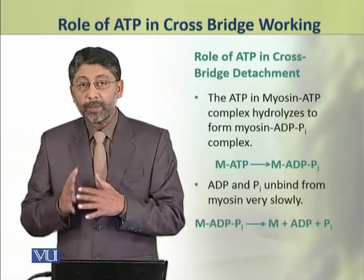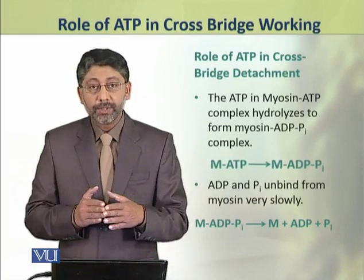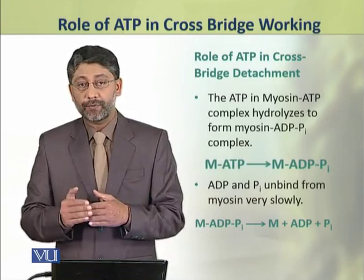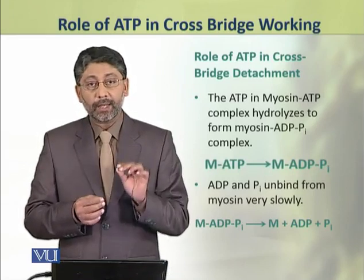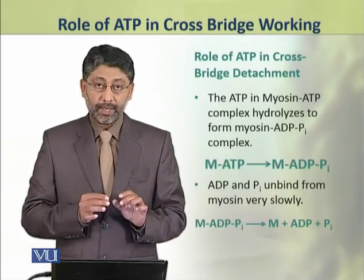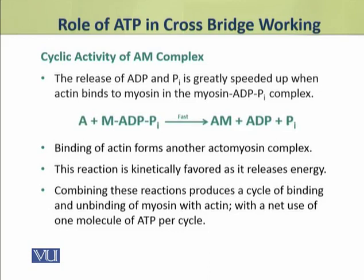The ATP in the myosin-ATP complex hydrolyzes to form a myosin-ADP inorganic phosphate complex. From this complex, the ADP and inorganic phosphate dissociate very slowly. However, the release of ADP and inorganic phosphate is greatly speeded up when actin binds to myosin in this myosin-ADP inorganic phosphate complex. This binding of actin forms another actomyosin complex.